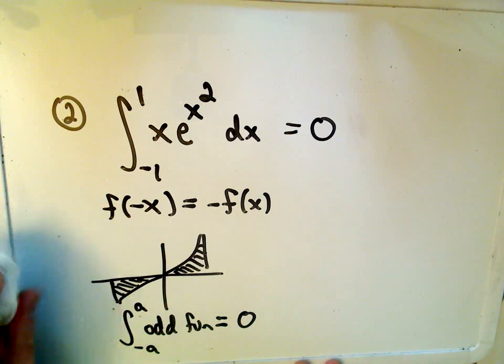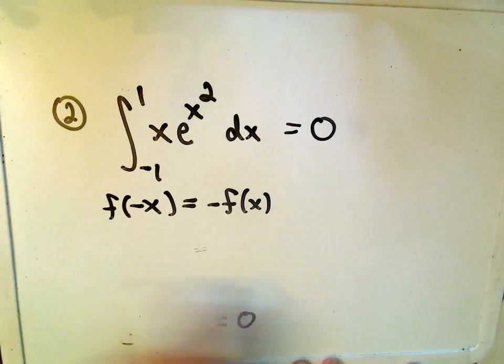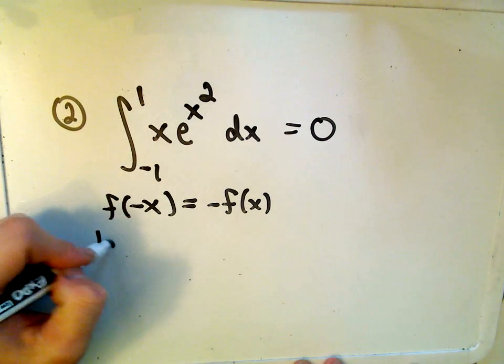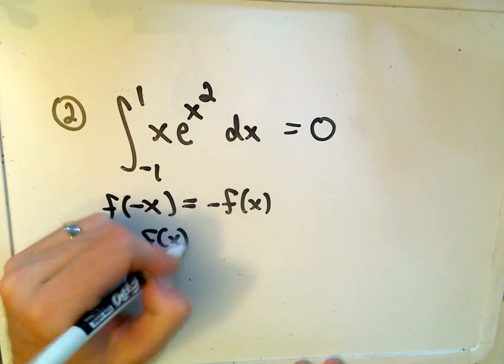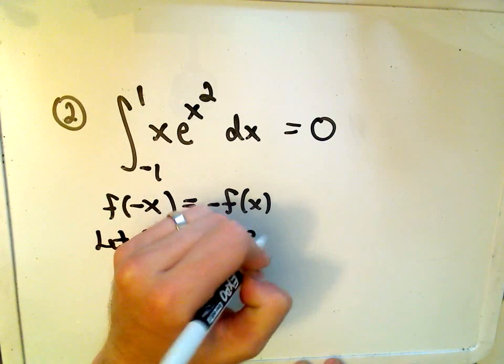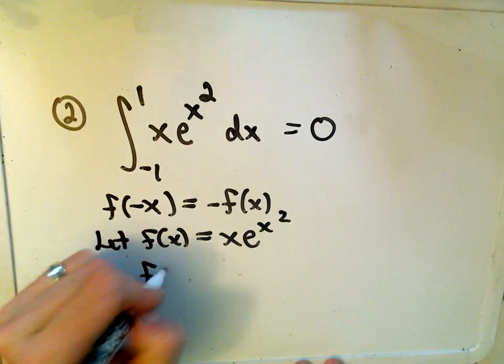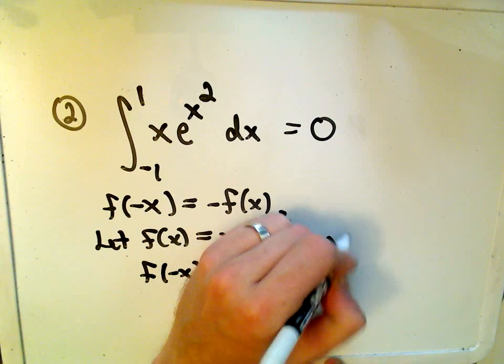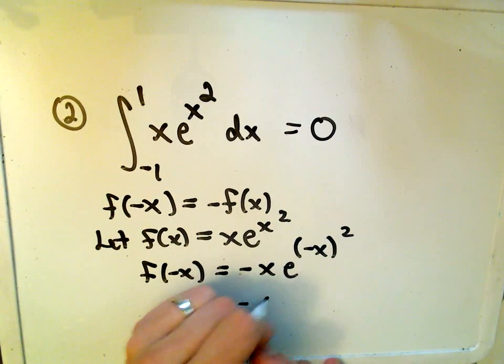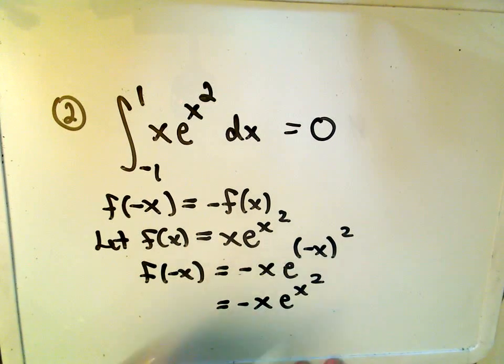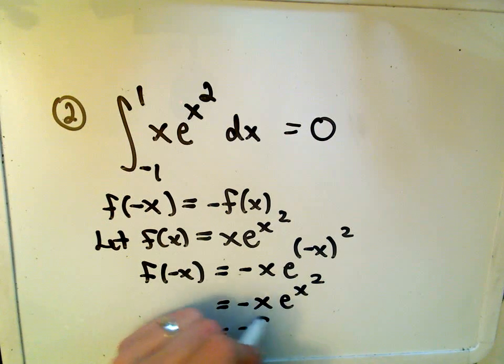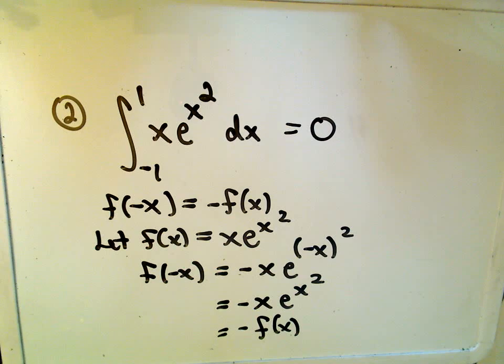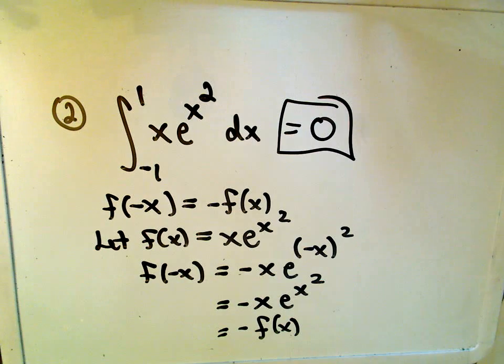Well, it's easy to show that x e to the x squared is in fact an odd function, because if we let f of x be our function, x e to the x squared, well, f of negative x is negative x e to the negative x squared. Well, that's simply negative x e to the x squared once we square it out. And that is, of course, the negative of what we started with. So we do have an odd function over a symmetric interval, so we know that its value is 0.